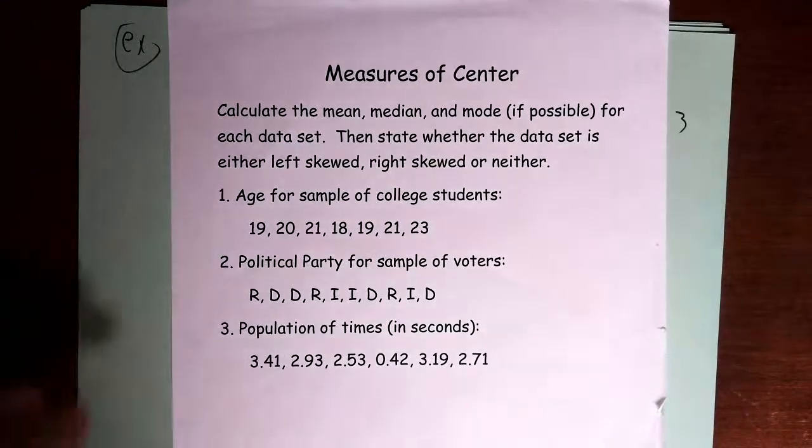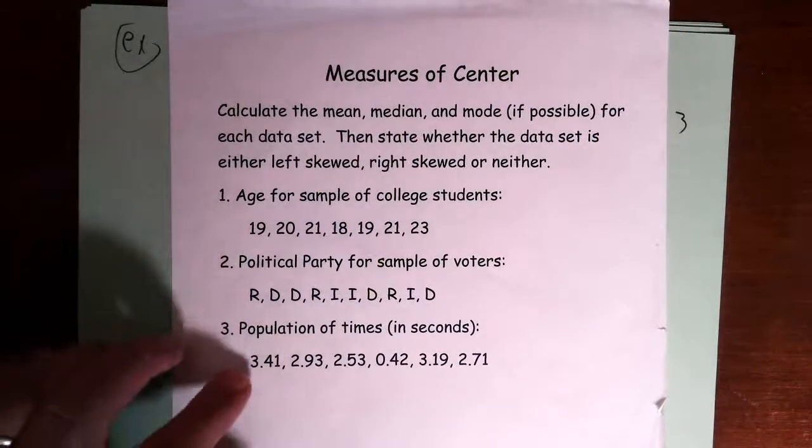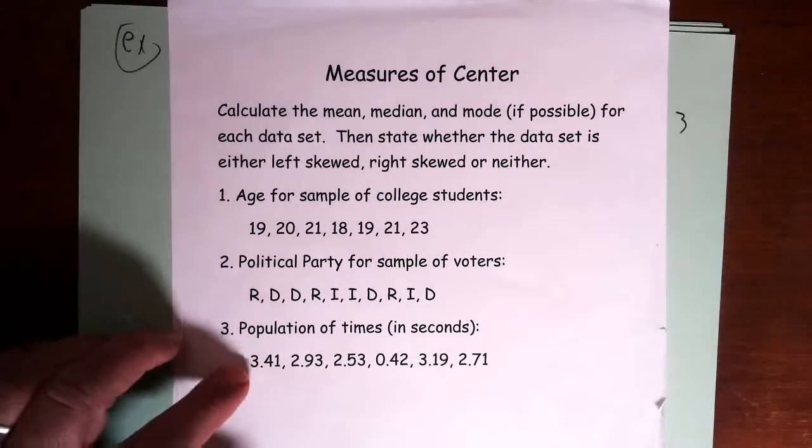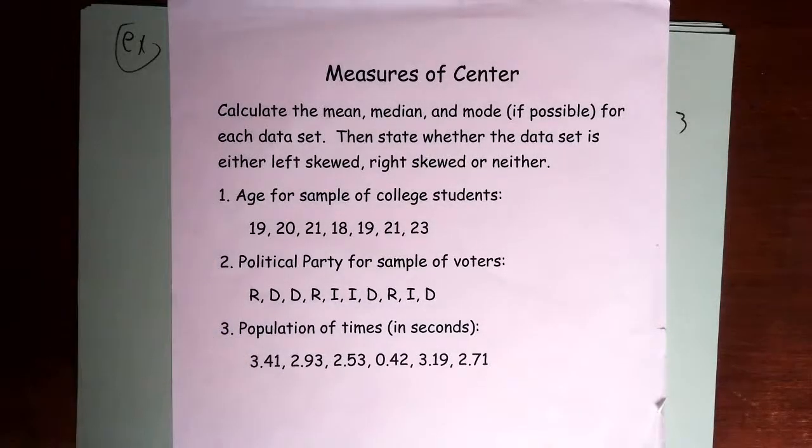And I want you to notice, this is a sample of college students, a sample of voters, but this is a population of times. And so be aware of the notation that you're using, especially for the mean, because there's notation for sample mean, population mean.